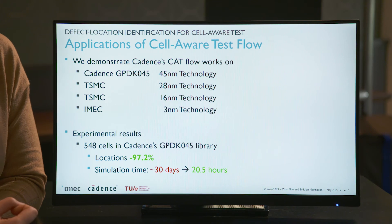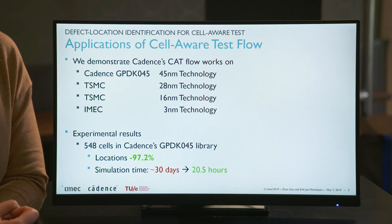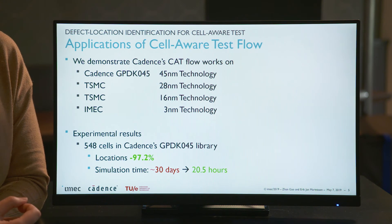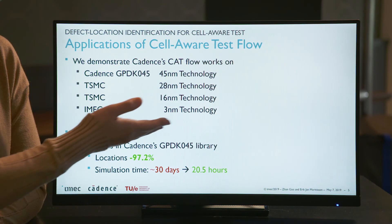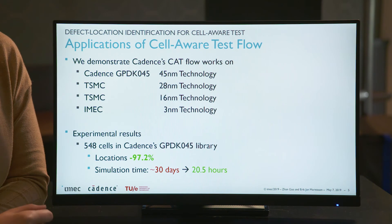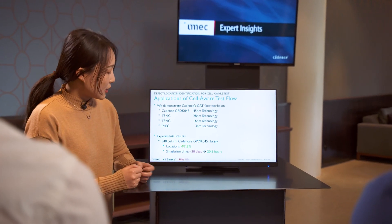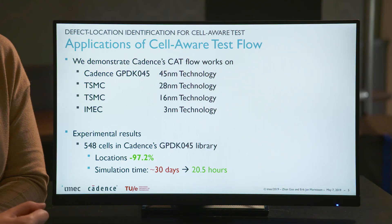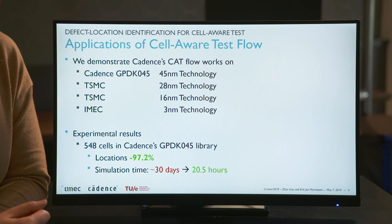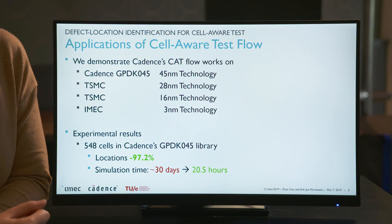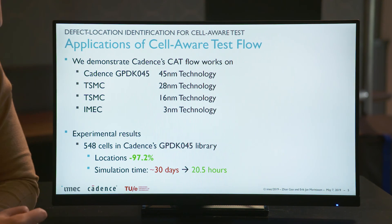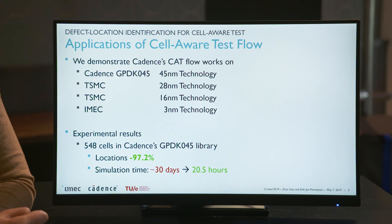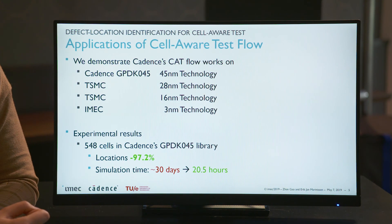Our CAD flow also works on 45 nanometer library, TSMC 28 and 18 nanometer technologies, and now even 3 nanometer technology. It's quite a robust test flow. Taking the GPDK library as an example, for the 548 cells in this library, we reduce the number of defect locations by 97 percent, and the corresponding simulation time is reduced from more than one month to just 20 hours.